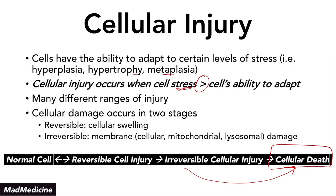So that is cell injury. Now, when you get to the cell death stage, there are multiple ways that your cells can die. They can either go through necrosis, which we've discussed in a previous lecture, or they can go through apoptosis. And in this lecture, obviously, we're going to be discussing apoptosis. So let's just dive right in.